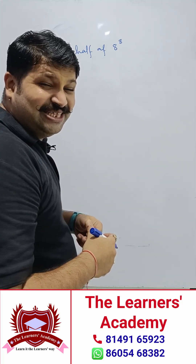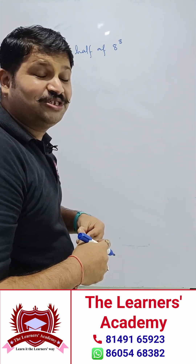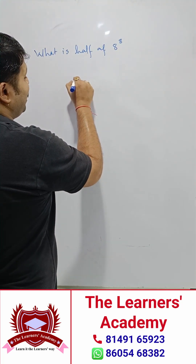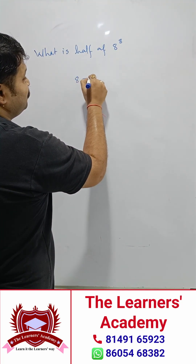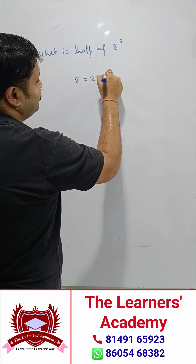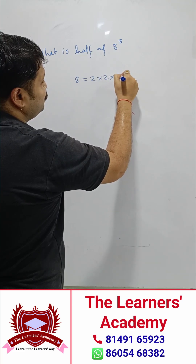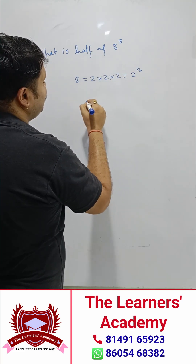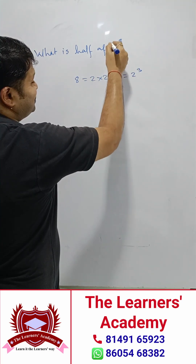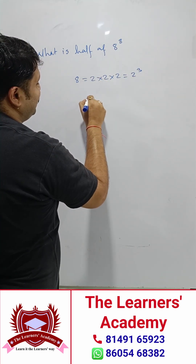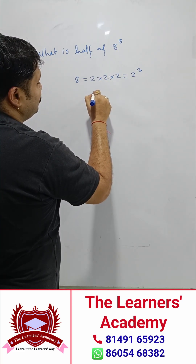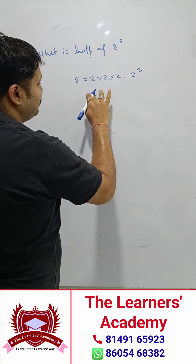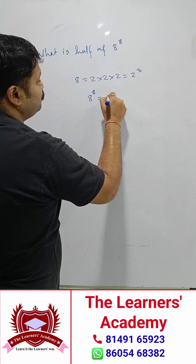First, let's rewrite it in the simplest form. Instead of 8, I can write 8 as 2 multiplied by 2 multiplied by 2, which is 2 to the power of 3. So I can replace that 8 and write 8 to the power of 8.